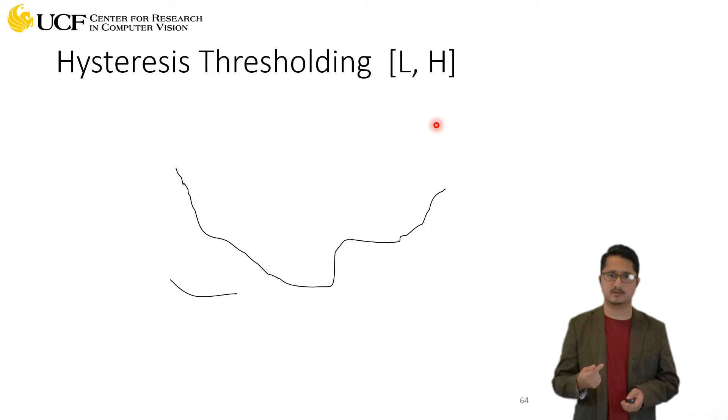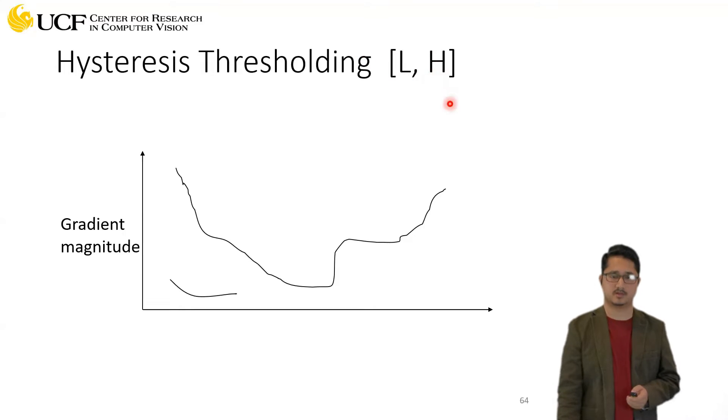The idea is instead of having a single value of threshold, we have two different values, which gives us some kind of bandwidth. We call these lower threshold and higher threshold.